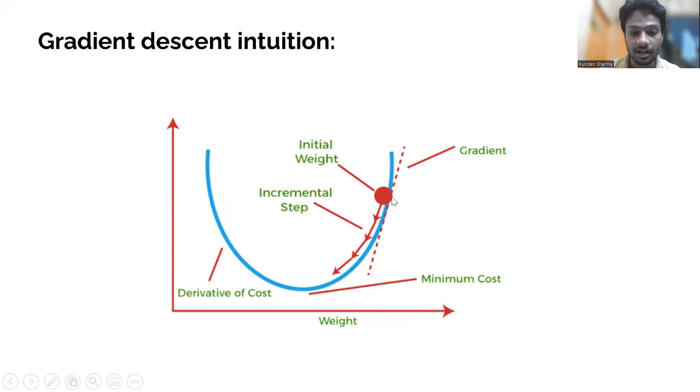So in this case, if the gradient is positive, then subtracting it from the current weights would move it to the left, towards the optima. And if our gradients are negative, then adding that to the current weights would move it to the minima, towards the right side. So that's how gradient descent works.